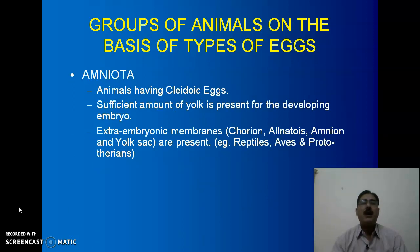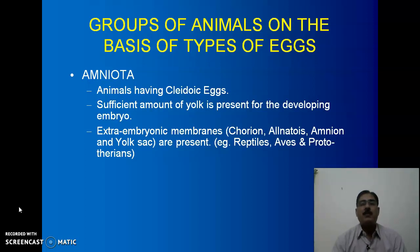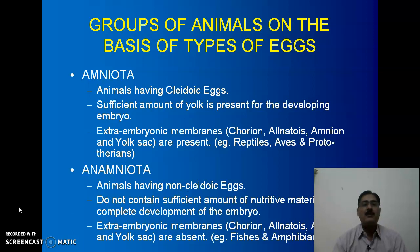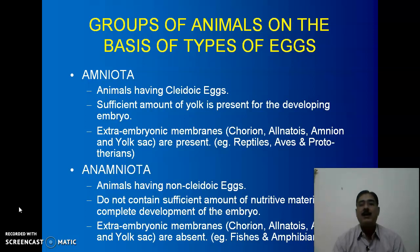Animals can be grouped on the basis of egg type. First, Amniota — those animals which have cleidoic eggs. A cleidoic egg has sufficient yolk for the development of the embryo and extra-embryonic membranes like chorion, allantois, amnion, and yolk sac are present; for example, reptiles, birds, and prototherian mammals. Second, Anamniota — those animals in which the amnion is absent. They have non-cleidoic eggs which do not contain sufficient nutritive material for complete development of the embryo, and extra-embryonic membranes like chorion, allantois, amnion, and yolk sac are totally absent, as in the case of fishes.